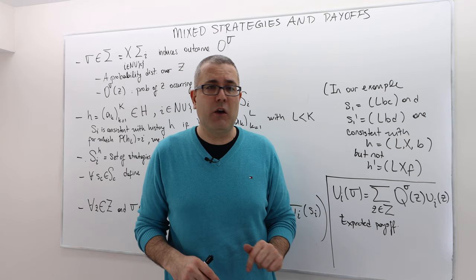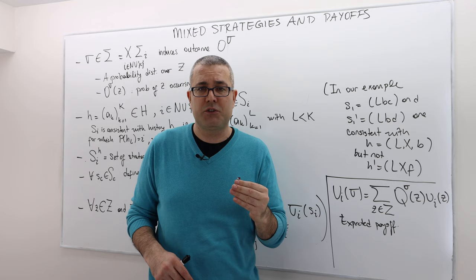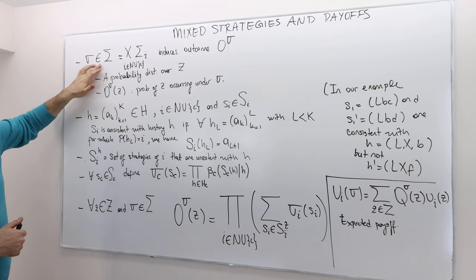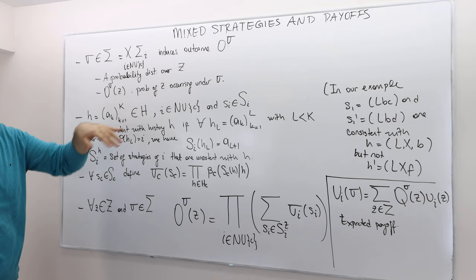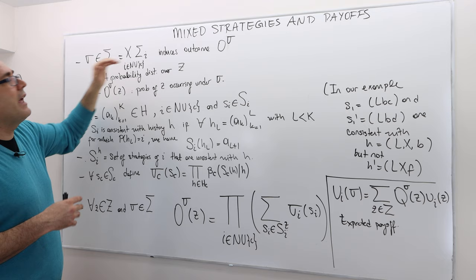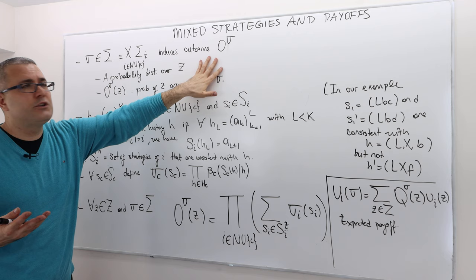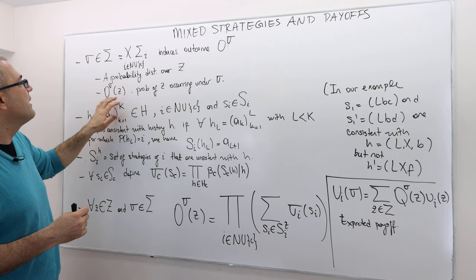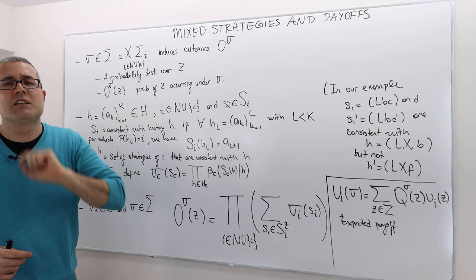The question is: how do we determine this probability distribution over terminal histories? It's going to be a bit more complicated than the pure strategies version. For any mixed strategy profile — and I'm going to include nature or the chance in this profile; if chance is not included, I'll just ignore it — any strategy profile is going to induce this probability distribution O superscript sigma. O^σ(z) tells me the probability that terminal history z will occur if players play mixed strategy profile sigma.